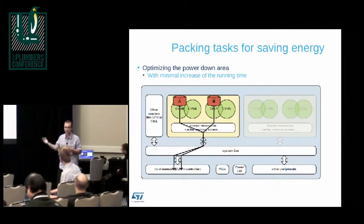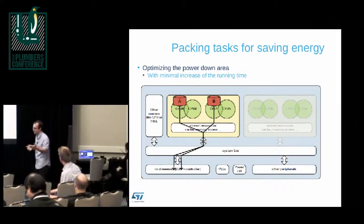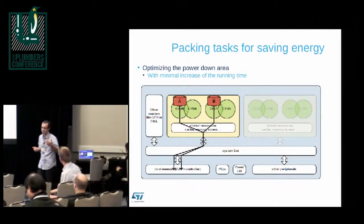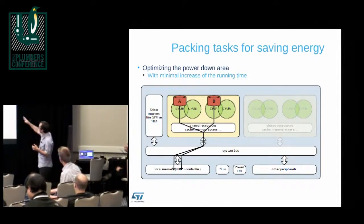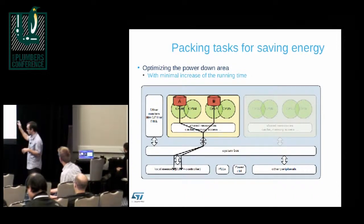An additional difficulty is that each platform, depending on its process and temperature, will have a different threshold where packing is useful. Leakage has an impact on whether it's better to pack or race-to-idle. This value can change over time: with small system leakage you can afford to pack because it's more efficient, but as leakage increases packing may no longer be useful.